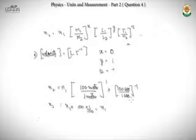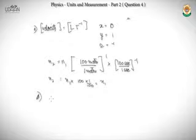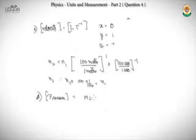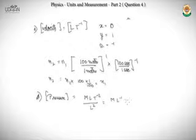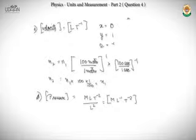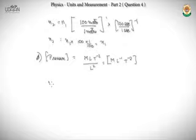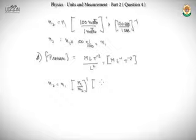Checking option D — pressure: dimensions are ML⁻¹T⁻². Applying the formula: n₂ = n₁ × (1/10 kg / 1 kg)¹ × (100m / 1m)⁻¹ × (100s / 1s)⁻². This gives n₁ × (1/10) × (1/100) × (1/10000) = n₁ × 10⁻⁷. But the option states 10⁻³, so option D is also wrong.